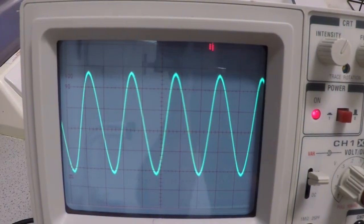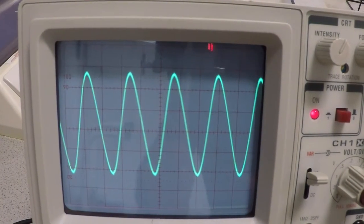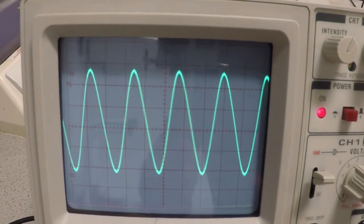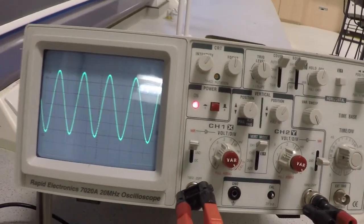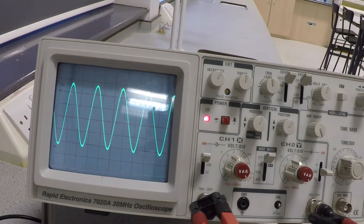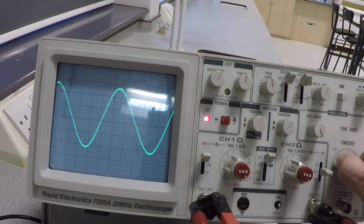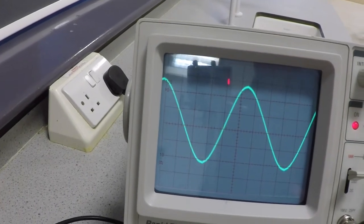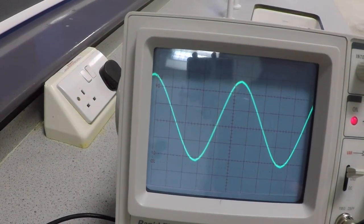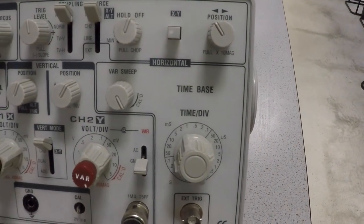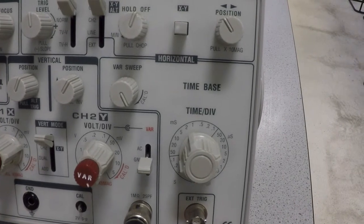We've got to work out what the period of that wave is. The way we work it out is by looking at the setup of this. The first thing we've got to do is change the time base so we've got about one wave visible on here. I can see about one wave and I've got the time base set to about 20 microseconds per centimeter.